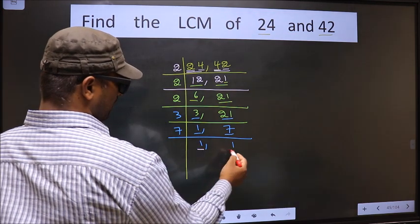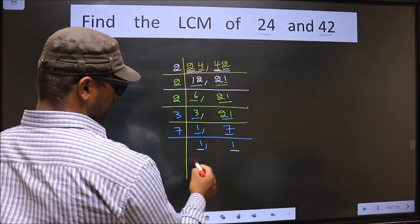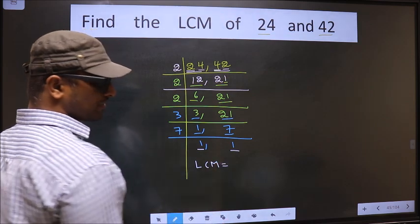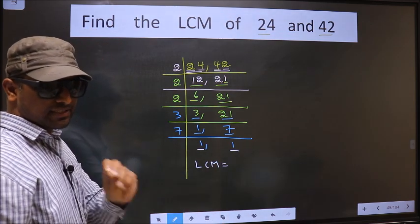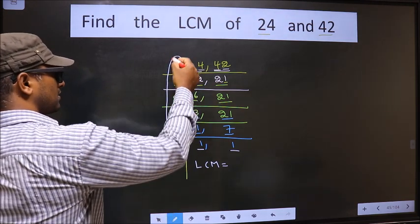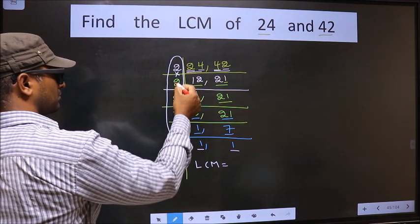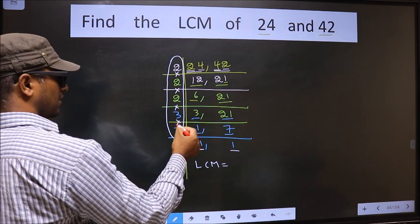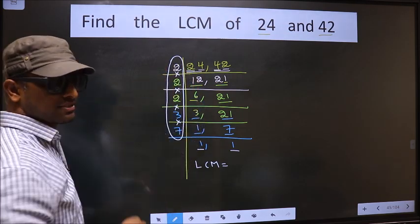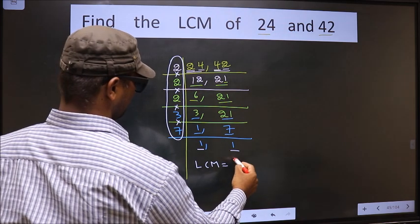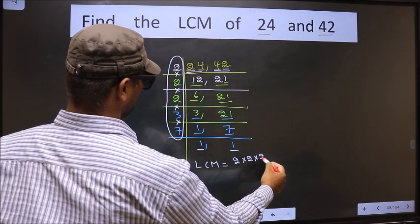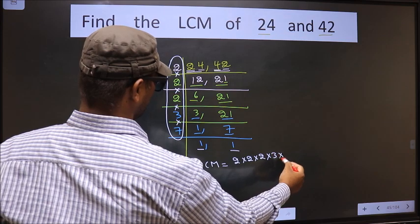We got 1 in both places, so our LCM is the product of these numbers — that is 2 times 2 times 2 times 2 times 3 times 7.